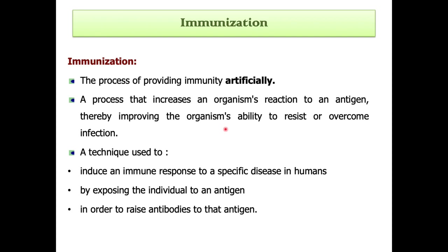To some extent, we need to introduce a foreign substance or foreign antigen to our body so that our body has a shield against future infections. For example, you take immunizations for a particular disease. In the future, if that disease tries to infect your body, your body already has a shield — the antigen cannot be activated and cause harm. This is the technique used to induce a response to a specific disease in humans by exposing the individual to an antigen in order to raise antibodies.